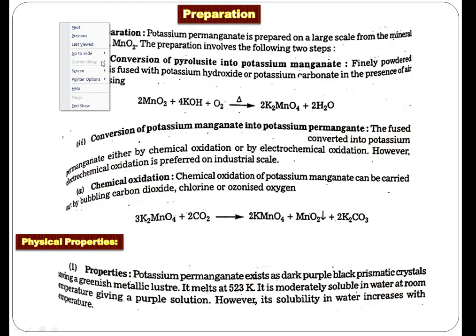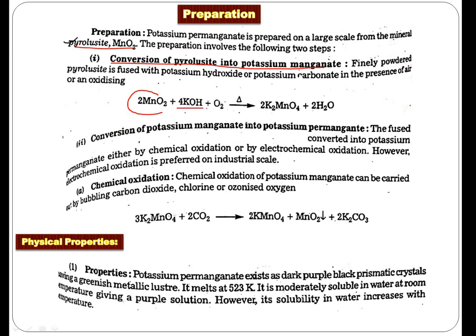We will start with preparation. Potassium permanganate we can prepare from an ore called pyrolusite, MnO2. To prepare this, there are two steps. Step number one: the conversion of this ore, pyrolusite into potassium manganate. Pyrolusite ore is fused with potassium hydroxide in presence of oxygen or an oxidizing agent and then you get potassium manganate.